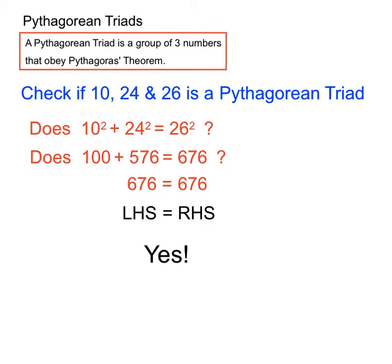So, the left-hand side equals the right-hand side. That makes mathematical sense there. So, we would say yes, those three numbers, 10, 24, and 26, is in fact a Pythagorean triad. It checked out using Pythagoras' theorem, and it made mathematical sense.